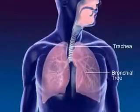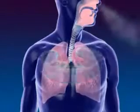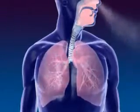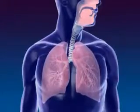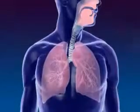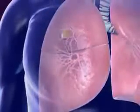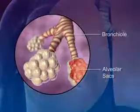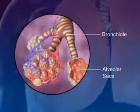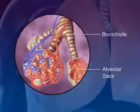The trachea, or windpipe, connects the larynx to the bronchial tree. The cartilage rings of the trachea prevent it from collapsing. Lungs are spongy tissue with alveoli and blood capillaries. Breathing occurs because of the expansion and contraction of the lungs. The bronchi carry air and subdivide into smaller branches called bronchioles.